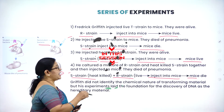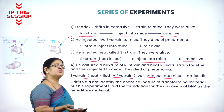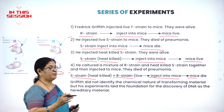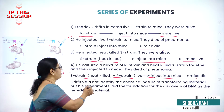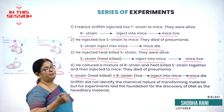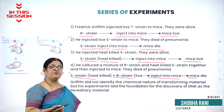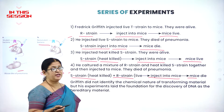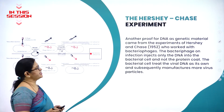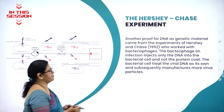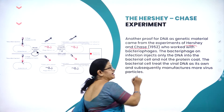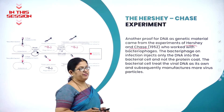He was able to prove that R-strain was transformed into S-strain. That genetic material called DNA was transferred from S-strain to R-strain, making R-strain, which was non-virulent, into virulent, thereby killing the mice. Another proof for DNA as genetic material came from the experiments of two more scientists called Hershey and Chase in 1952.